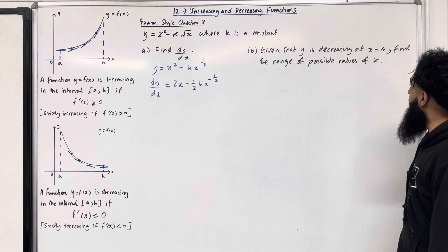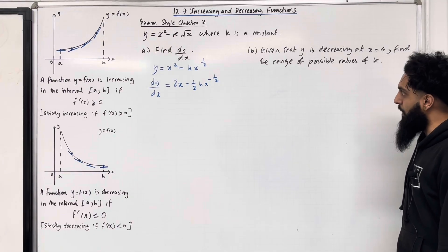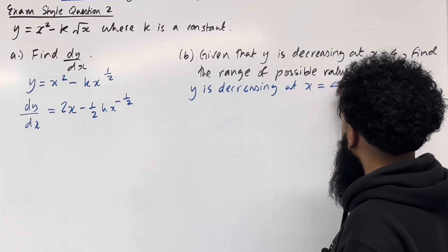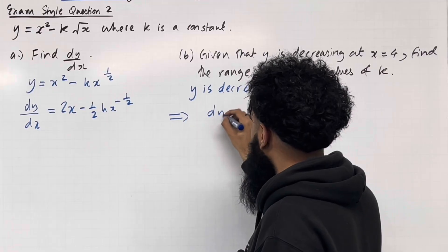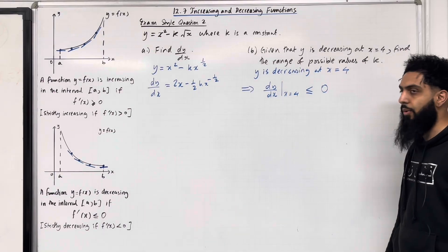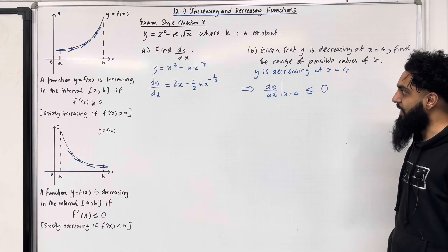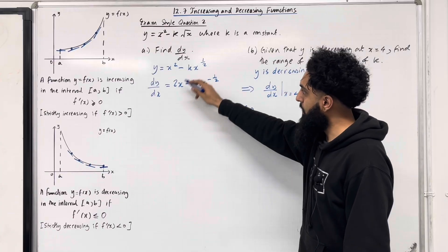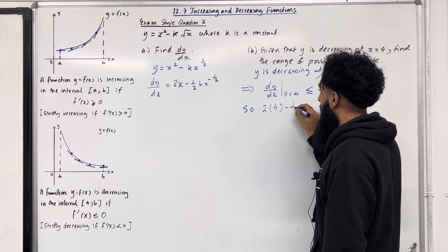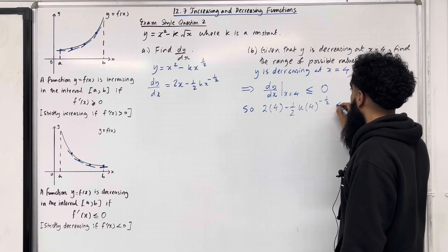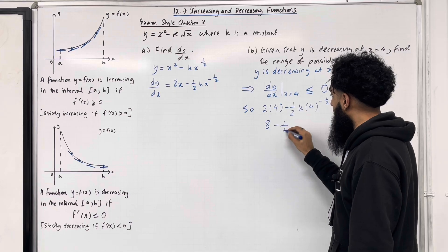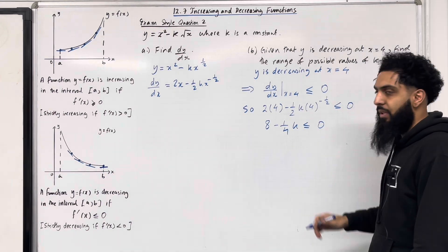Part B: given that y is decreasing at x = 4, find the range of possible values of k. We are told that y is decreasing at x = 4. Mathematically, this implies that dy/dx at x = 4 has to be less than or equal to 0 by definition of a decreasing function. We substitute x = 4 into dy/dx: 2(4) - (1/2)k(4)^(-1/2) ≤ 0. This gives 8 - (1/4)k ≤ 0. Now we rearrange to make k the subject.